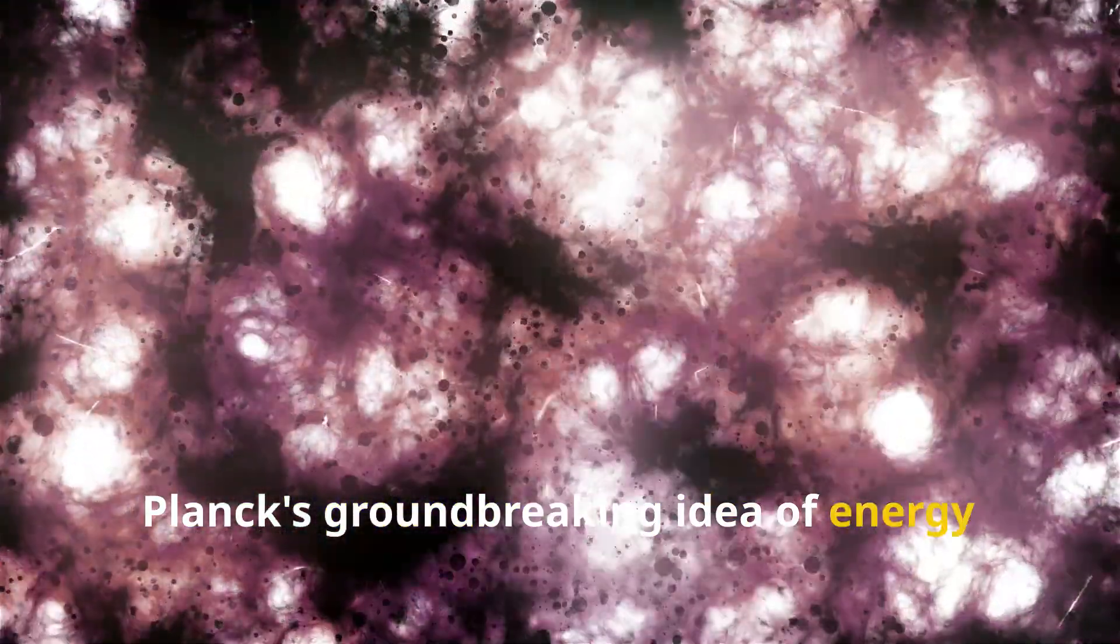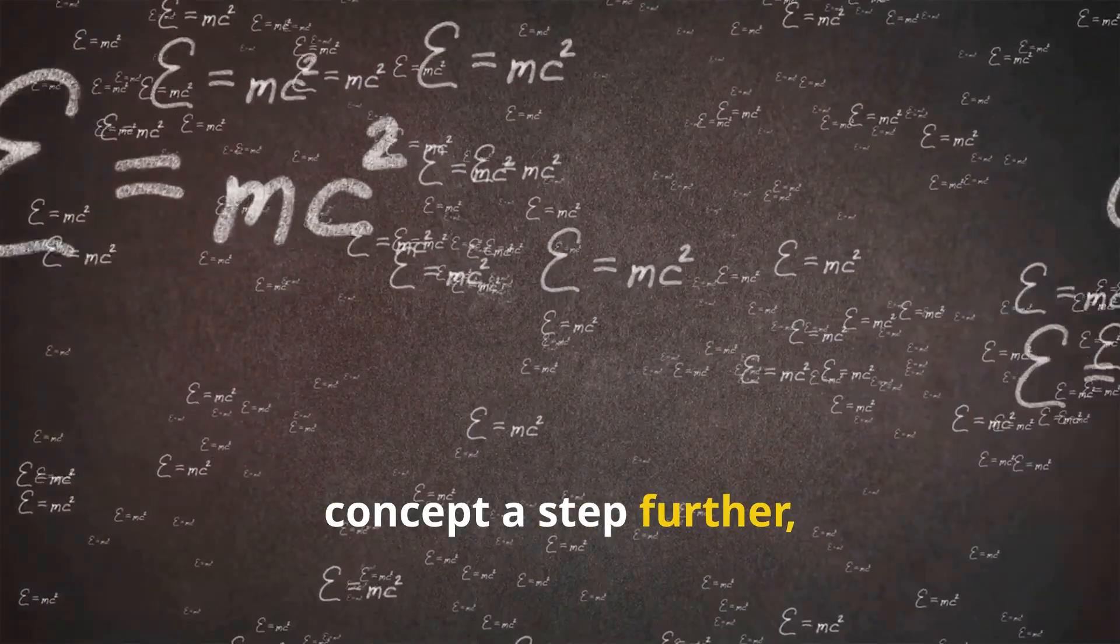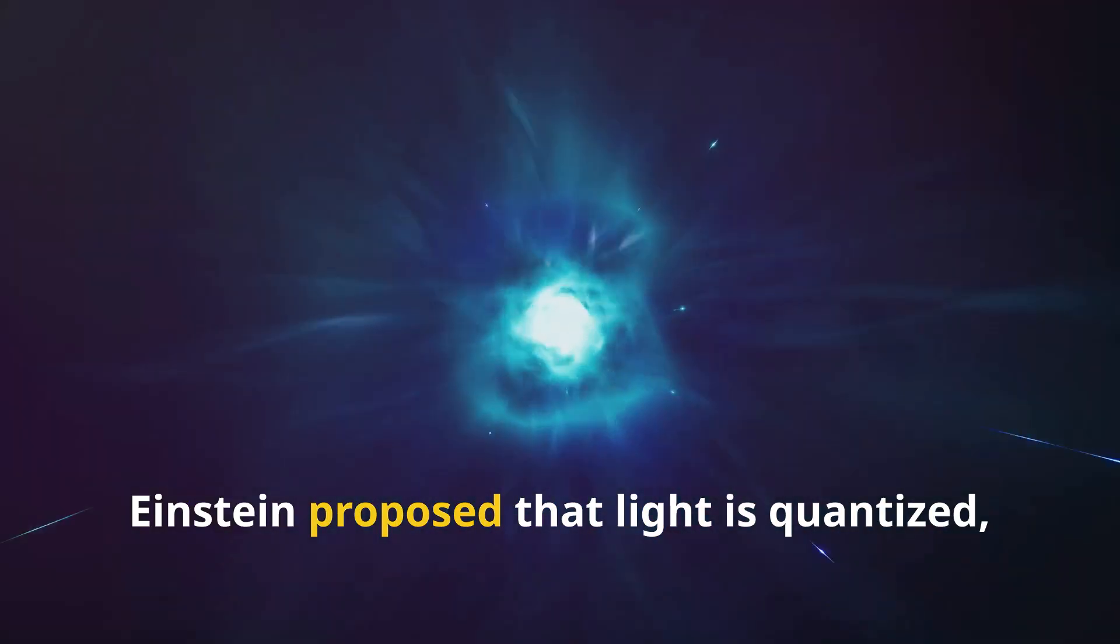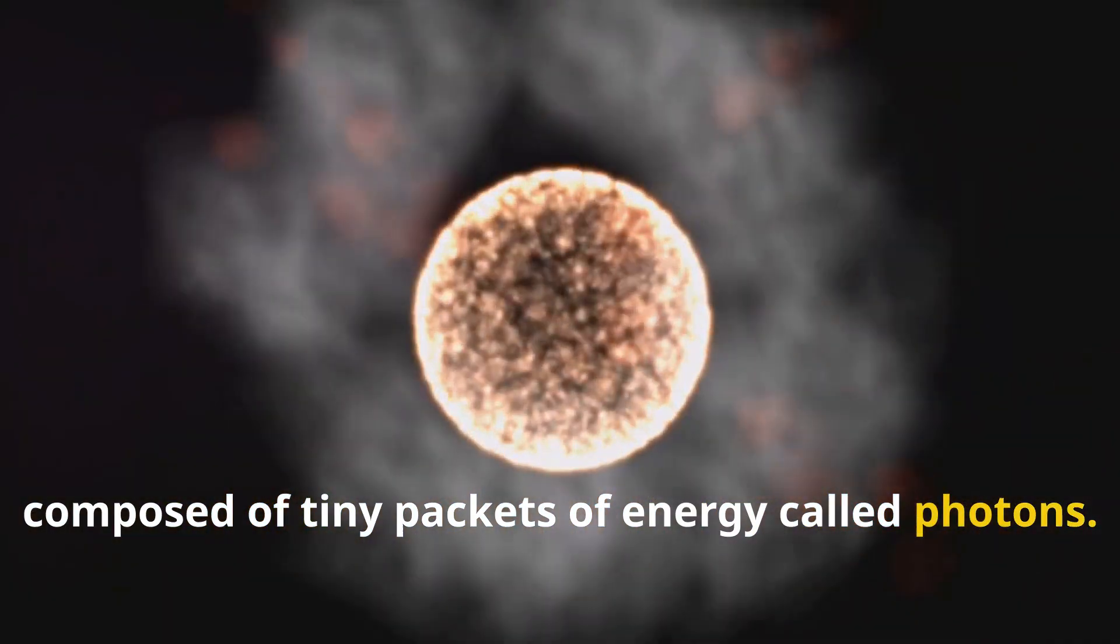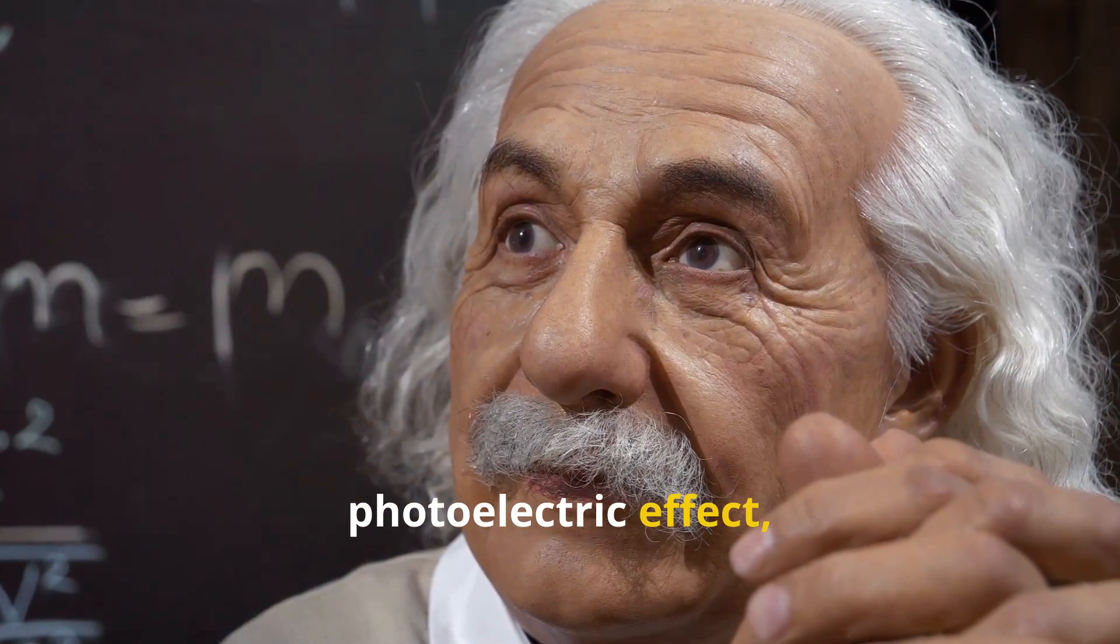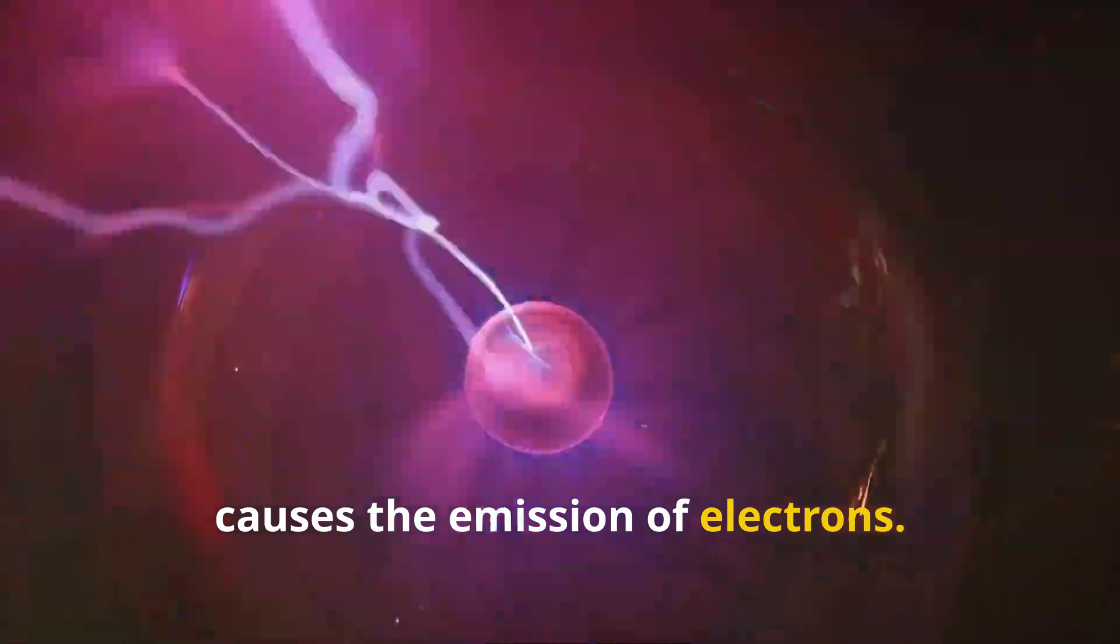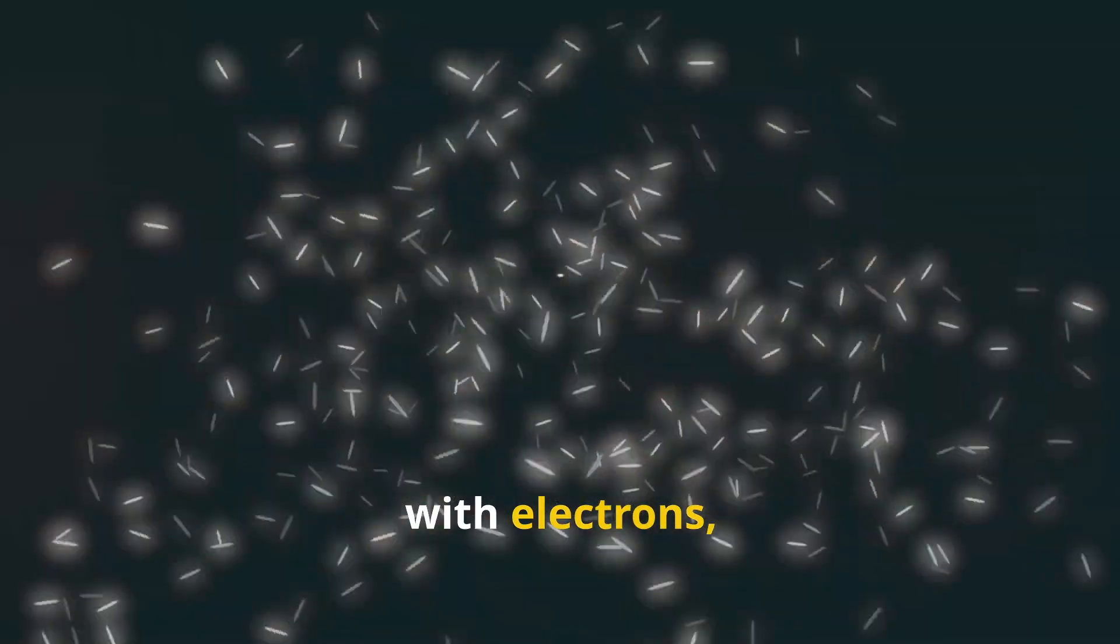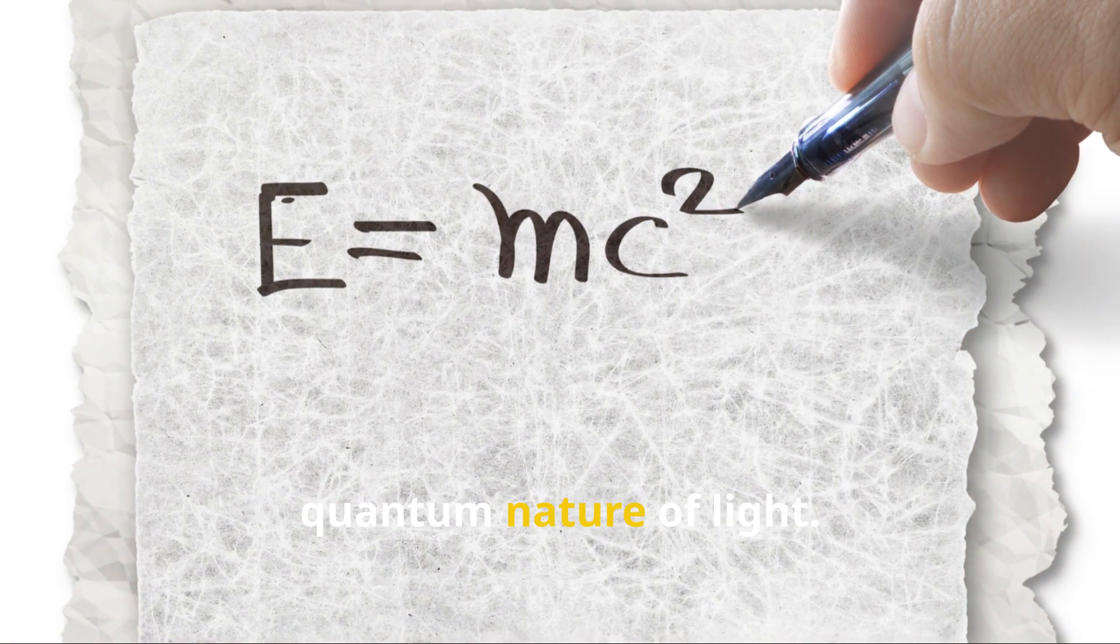Planck's groundbreaking idea of energy quantization revolutionized physics, but it was Albert Einstein who took this concept a step further, extending it to light itself. In 1905, Einstein proposed that light is quantized, composed of tiny packets of energy called photons. He used this idea to explain the photoelectric effect, where light shining on a metal surface causes the emission of electrons. Classical physics couldn't explain why only certain frequencies of light could trigger this effect. Einstein showed that photons interact with electrons, transferring energy in discrete packets, providing further evidence for the quantum nature of light.